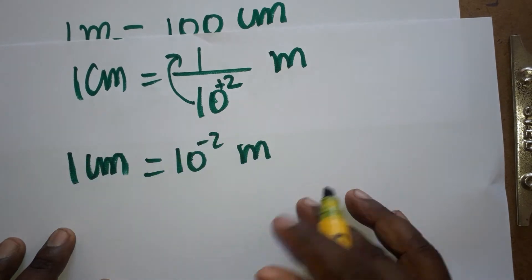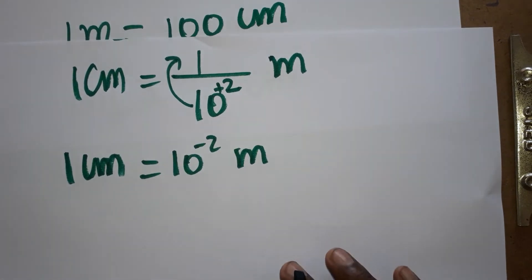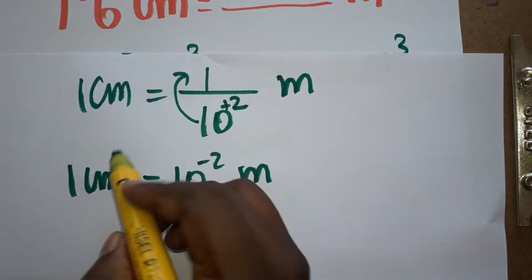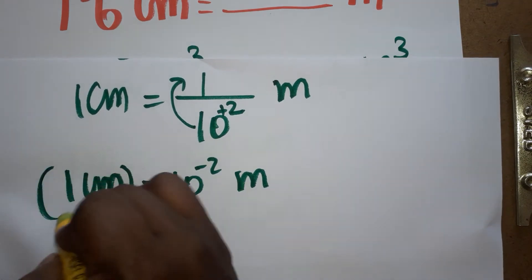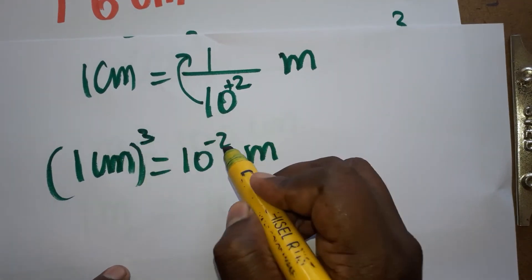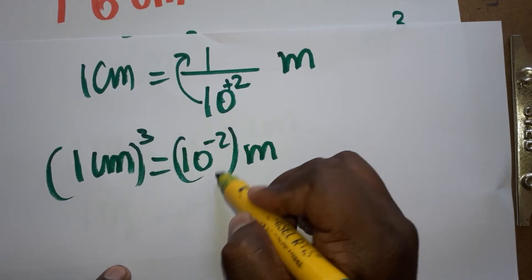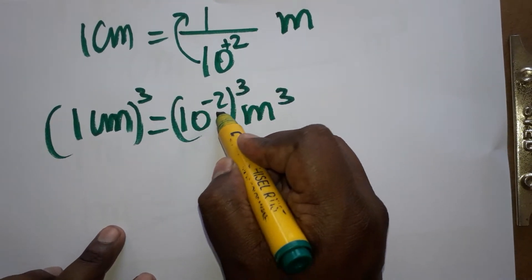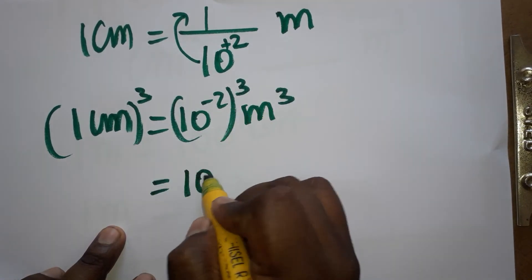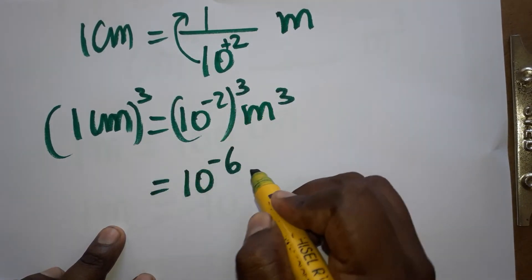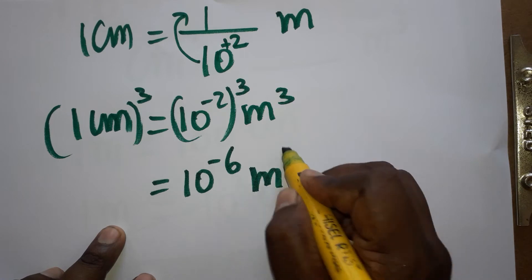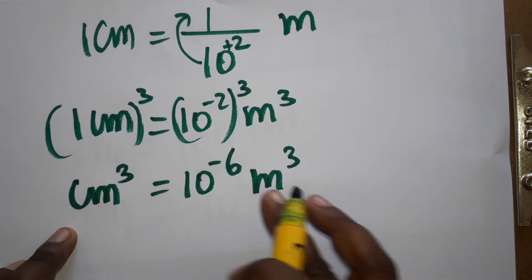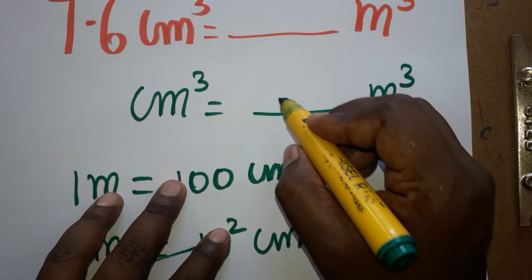Now we have centimeter cube. So centimeter cube equals 10 power minus 2, cubed, meter cube. 10 power minus 2 cubed gives us 10 power minus 6 meter cube. So 1 centimeter cube is equal to 10 power minus 6 meter cube.